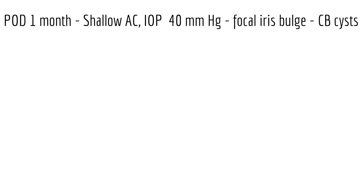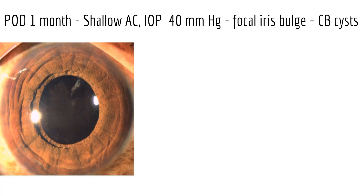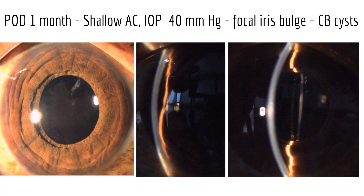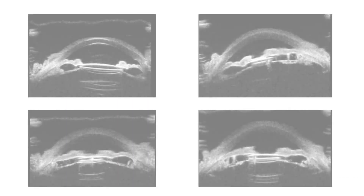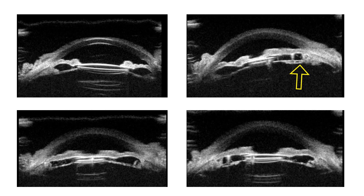This patient was referred one month after an uneventful cataract surgery for iris bulge. UBM revealed multiple small to medium-sized ciliary body cysts and an IOL in the bag. Laser PI can be done prophylactically in pseudophakic patients with occludable angles due to ciliary body cysts.